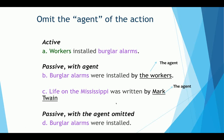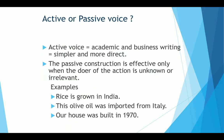Only transitive verbs can be used in the passive voice. If I say 'Bob died,' I cannot change that sentence to passive because 'to die' is an intransitive verb. For academic and business writing, advise your students to use active voice because it's simpler and more direct. The passive construction is effective only when the doer of the action is unknown or irrelevant — for example, 'Rice is grown in India,' 'The olive oil was imported from Italy,' or 'Our house was built in 1970.'